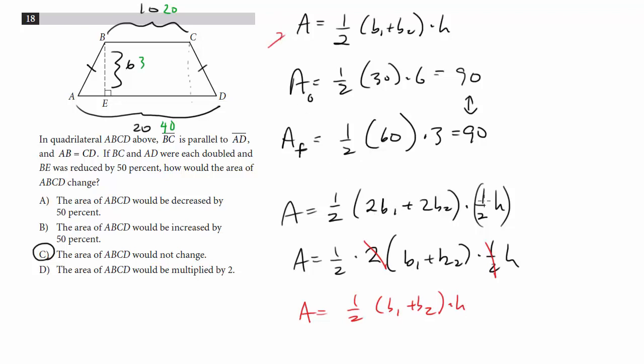So when we double these dimensions and have this, that doubling and halving cancels by the math here, and we get back the original equation, which, again, just emphasizes that there's no change to the area when you make the changes to these dimensions.